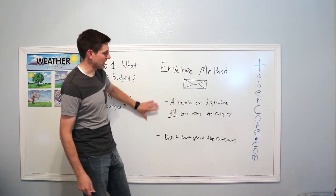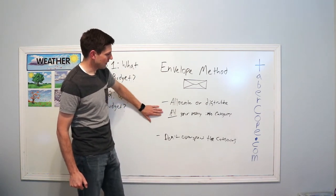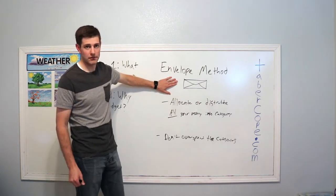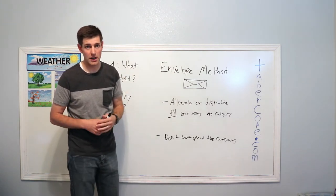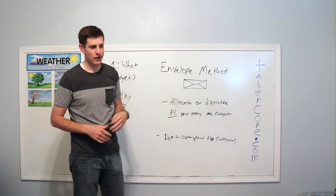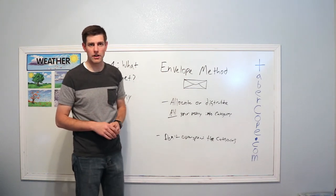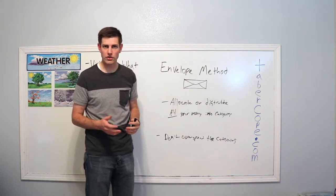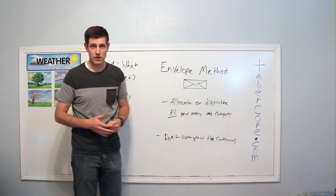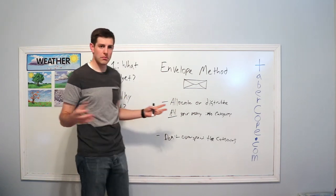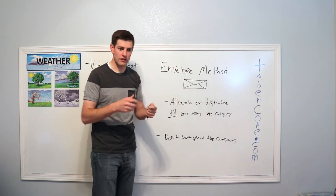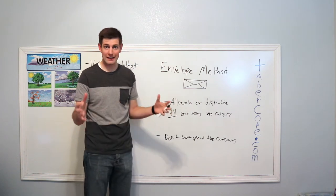So how the envelope method kind of works is think about the different areas that you spend your money. Let's say you've got housing costs, you've got to pay rent and you've got to pay electricity. You also have transportation costs. You've got to put gas in your car and you've got to do oil changes. You also have to buy food so that you can eat. So you're going to take all your money and if you picture it as if you took it in cash, you've got all your money in cash in front of you.